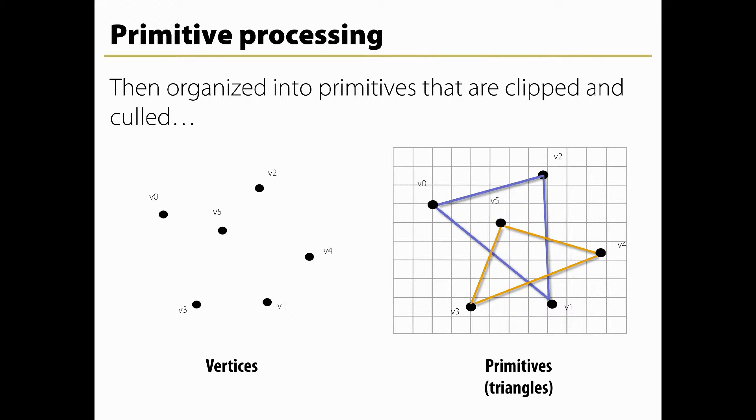Primitive assembly is the process of collecting a run of vertex data output from the prior stages and composing it into a sequence of primitives. The type of primitive the user ended with determines how this process works. The output of this process is an ordered sequence of simple primitives: lines, points, or triangles. If the input is a triangle strip primitive containing 12 vertices, for example, the output of this process will be 10 triangles.